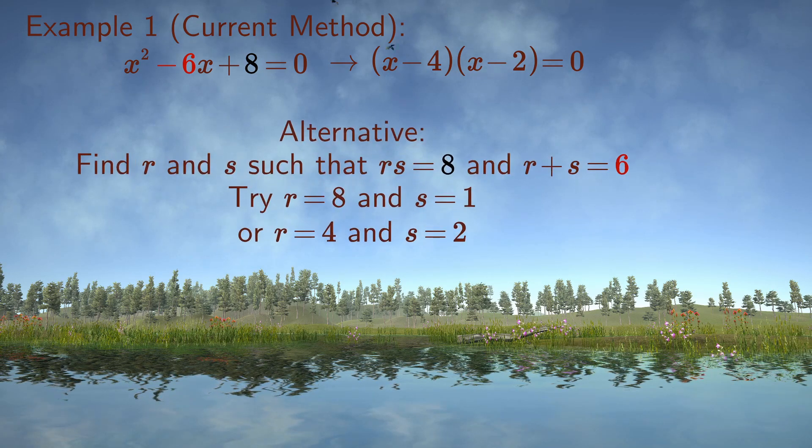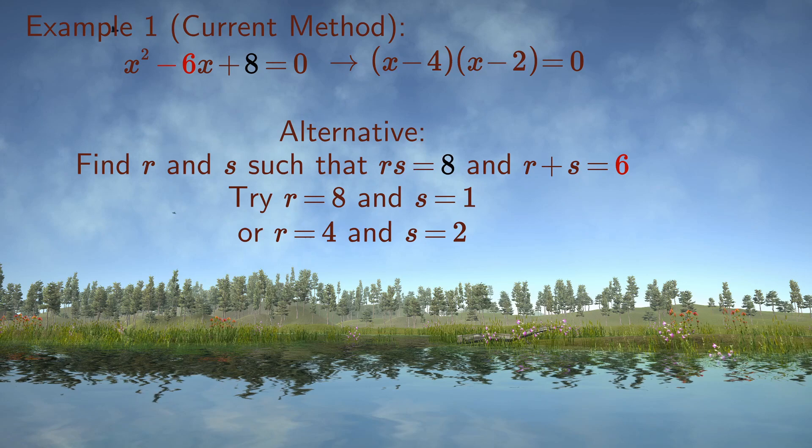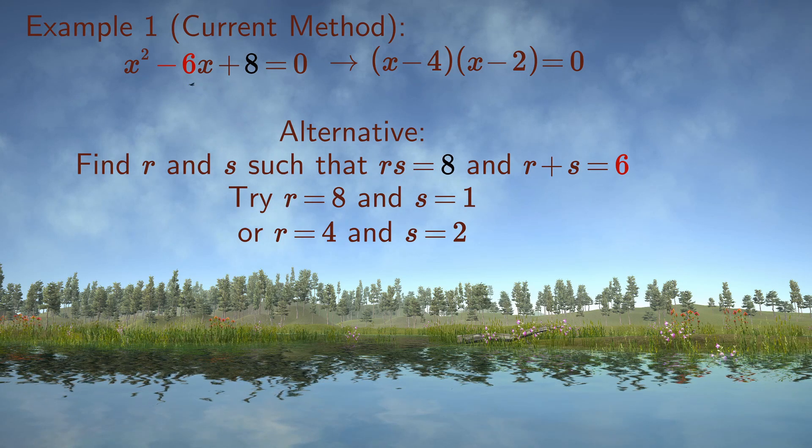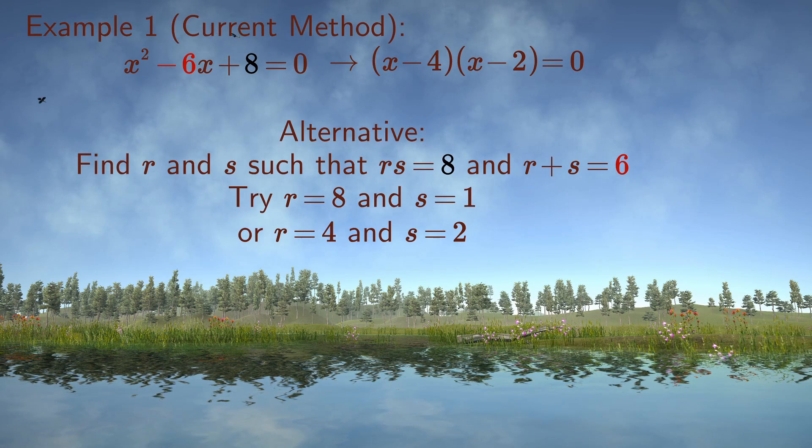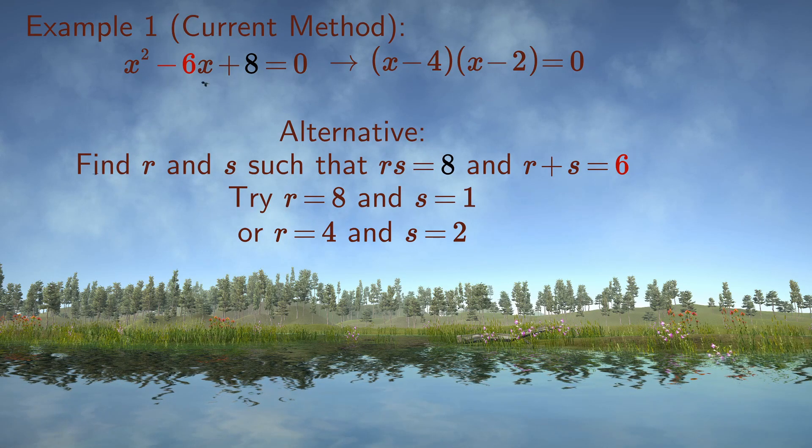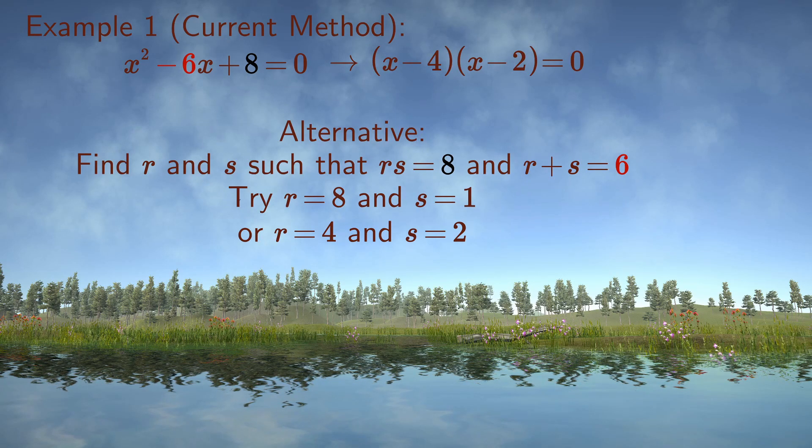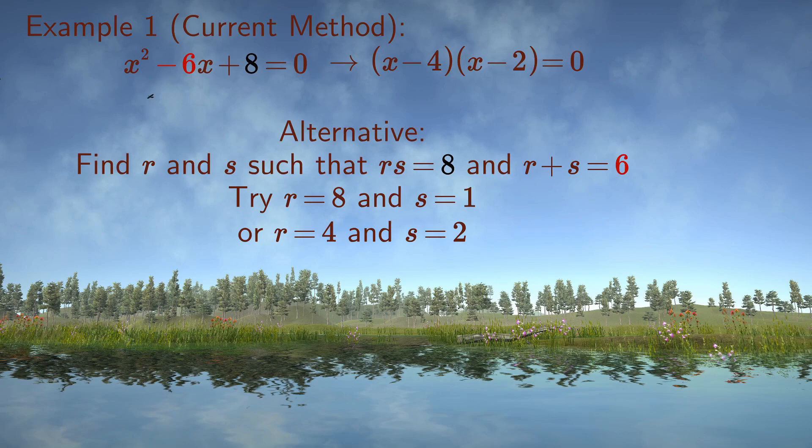Another method currently in use which does not require the formula is to search for integer factors r and s of c divided by a that when added together gives minus b over a. For 8 we can test 8 times 1 and 4 times 2, and we see that 4 plus 2 gives us the required 6.